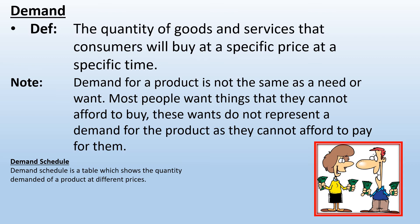Now we're going to look at demand. What is the definition of demand? Demand is the quantity of goods and services that consumers will buy at a specific price, at a specific time. What influences demand? Time and price. Note that demand for a product is not the same as a need or a want. Most people want things that they cannot afford — these wants do not represent a demand for the product. You will not demand something if you cannot pay for it. So, demand is directly linked to price.